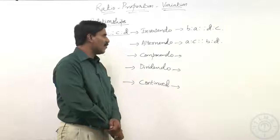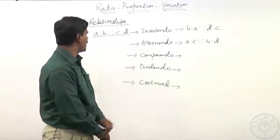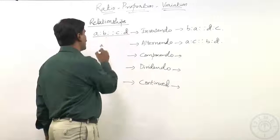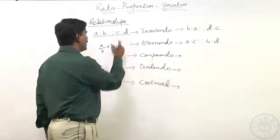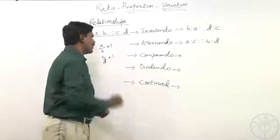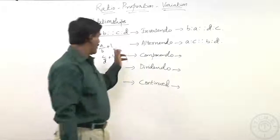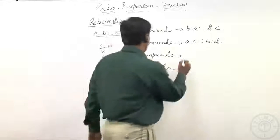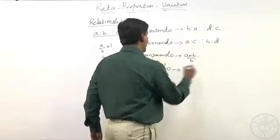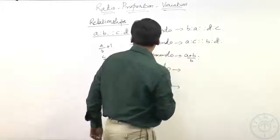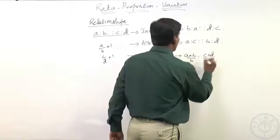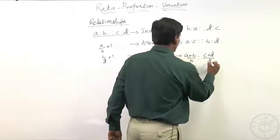Componendo is basically obtained by adding one to both the terms. Like a is to b can be written as a by b — add one. In the same way c is to d can be written as c by d — add one. So taking the LCM, componendo gives us a plus b is to b in proportion with c plus d is to d.